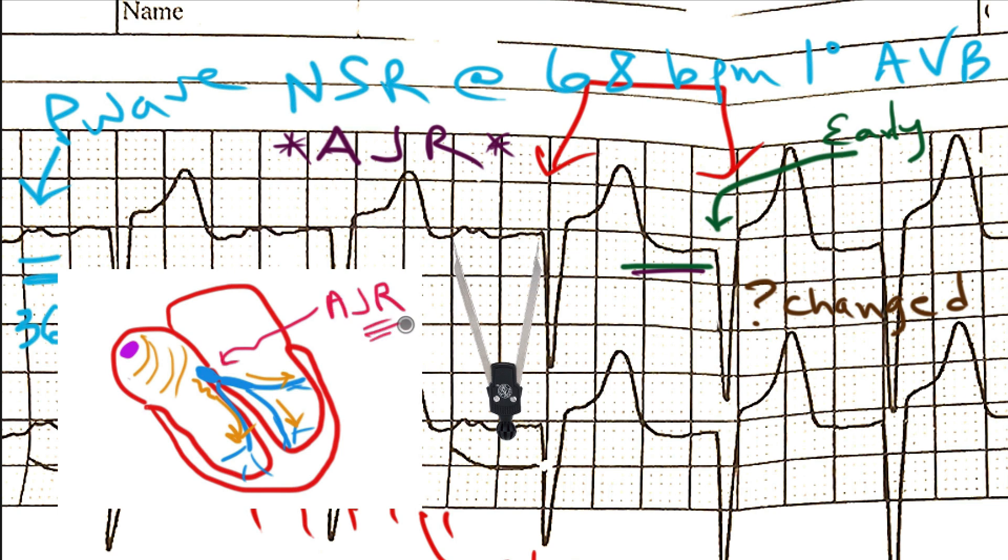So when you have a rate of 90 here, it means the AV node suddenly went faster than the sinus node and overtook the sinus node. So now you have a signal that goes down His-Purkinje system, but then generally makes its way back up the atria, resulting in a retrograde P wave.